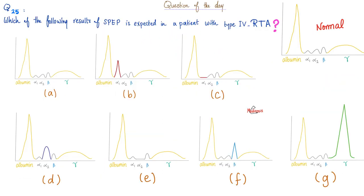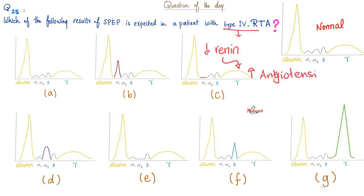Let's answer the question of the previous video. We did a serum protein electrophoresis and this is normal. What should we expect in a patient with type 4 renal tubular acidosis? Type 4 renal tubular acidosis is characterized by low renin and low aldosterone. If renin is low, no one is going to convert angiotensinogen, so it's going to keep accumulating. We'll have increased angiotensinogen.